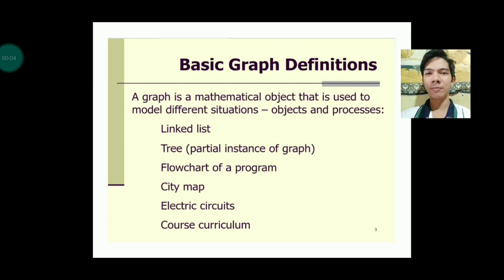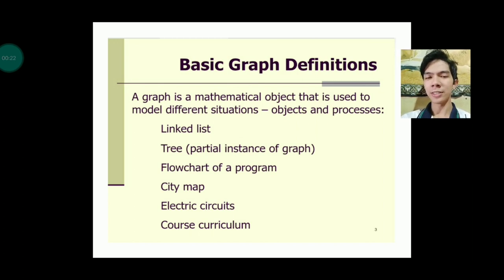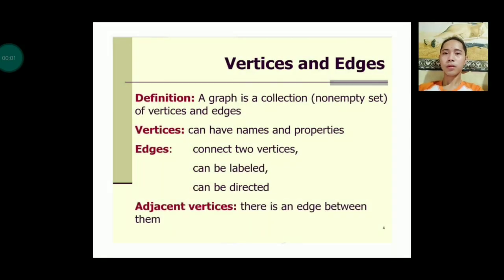A graph is a mathematical object used to model different situations, objects, and processes. Some real-life examples include a flowchart of a program, a city map, electric circuits, and a course curriculum. A graph has a basic definition which involves vertices and edges.